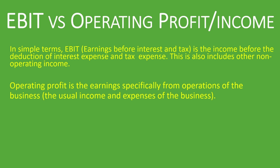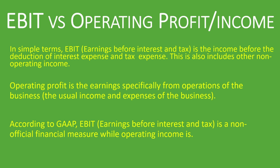So that's the difference between the two. Operating profit would usually come first, and then earnings before interest and tax would come later. According to GAAP — the Generally Accepted Accounting Principles — EBIT or earnings before interest and tax is a non-official financial measure, while operating income or operating profit is an official financial measure. So according to GAAP, EBIT is not an official measure, so you will not see those words in many financial statements.